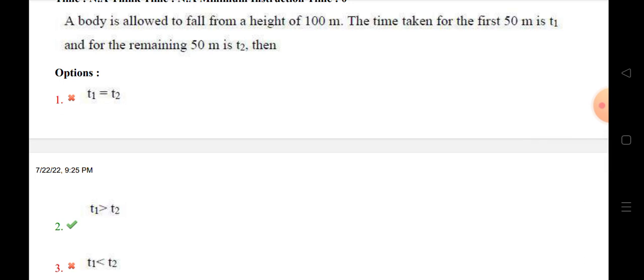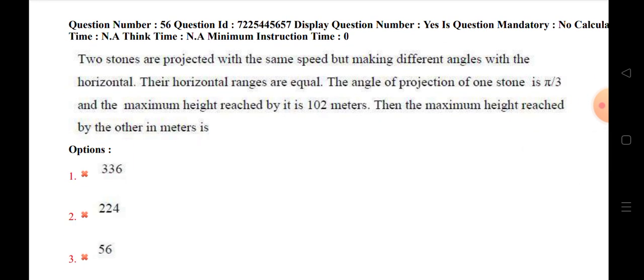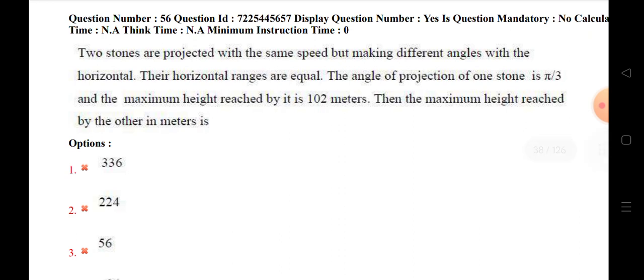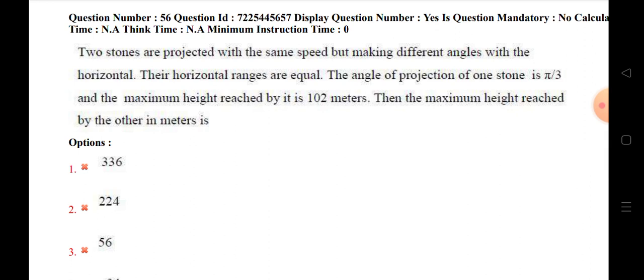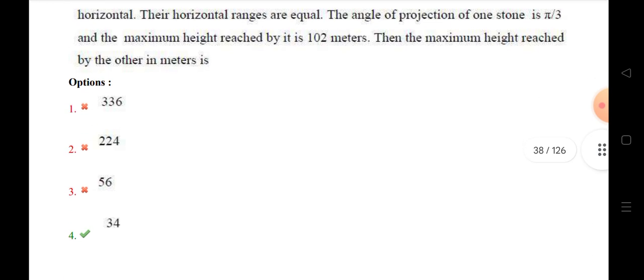Actually, the first T1 is 50 meters, and that is greater than T2. Two stones are projected with the same speed but making different angles with the horizontal. The horizontal ranges are equal. The angle of projection of one stone is 5π/3 and the maximum height reached by it is 102 meters. The maximum height reached by the other is 34 meters.